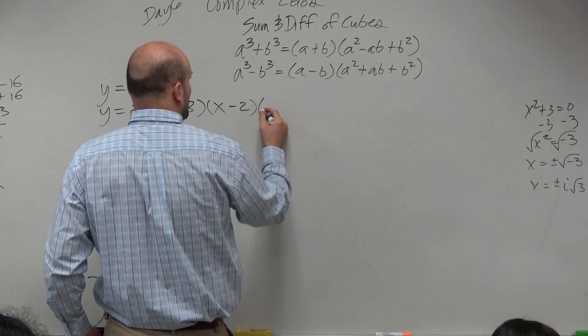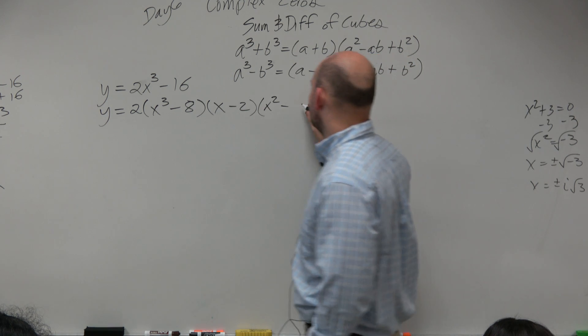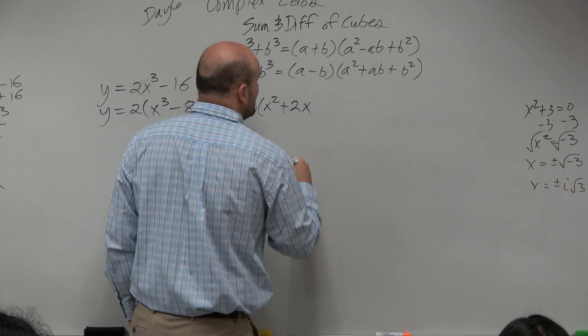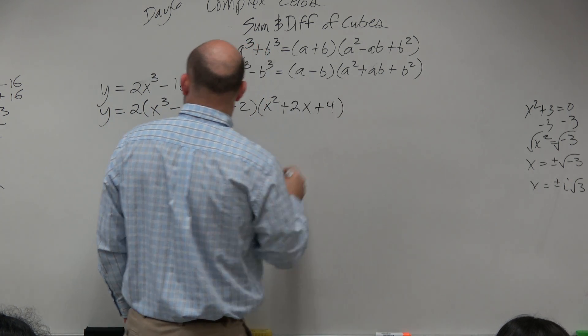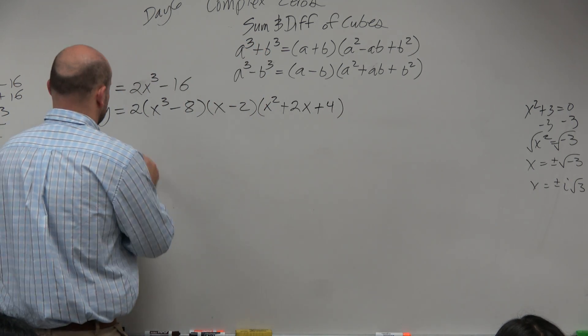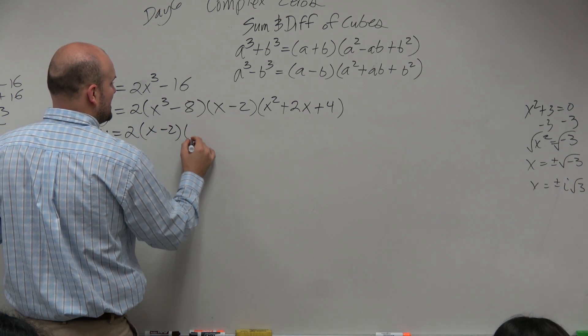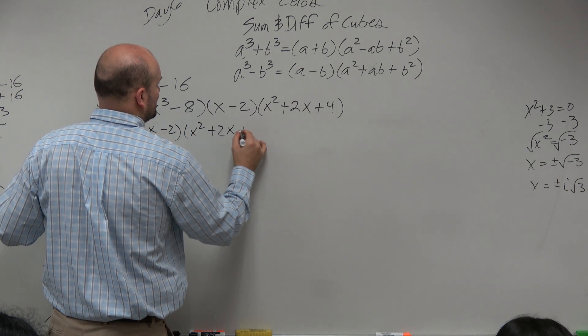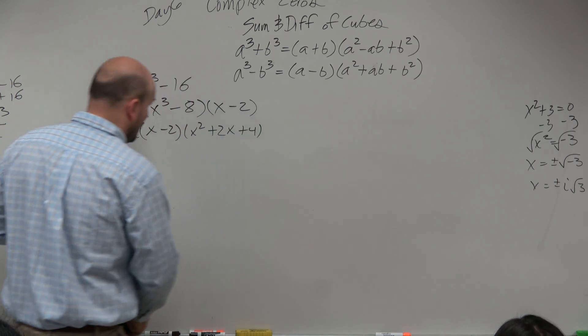Then we square x. We multiply x times a, which is 2x. That should be a positive. And then we square 2, which is going to give us 4. Oops, what am I doing? You got to write that down below. Factored form is x minus 2 times x squared plus 2x plus 4. All right, cool.